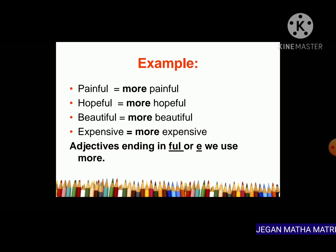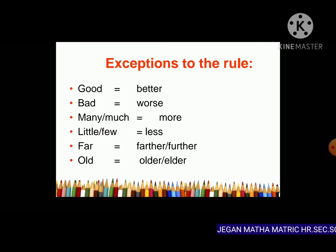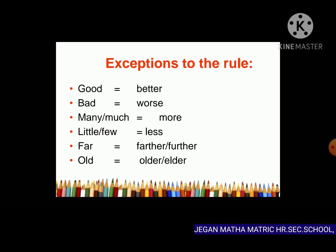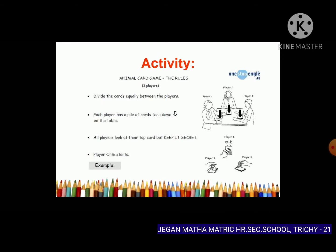Exceptions to the rule for comparative degree: good → better; bad → worse; many/much → more; little/few → less; far → farther/further; old → older/elder. These are irregular comparatives and do not follow the standard -er rule.